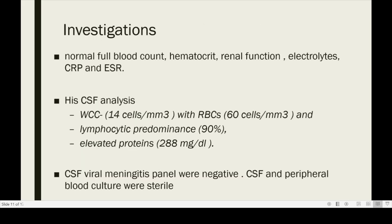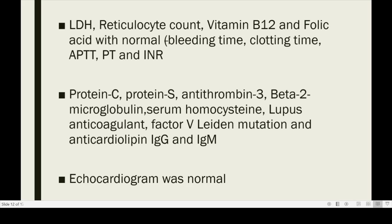We next investigated the cause of the internal cerebral vein thrombosis. He had a normal full blood count, hematocrit, renal function, electrolytes, and inflammatory markers. CSF count was elevated with 14 white cells and 60 red cells, predominantly lymphocytes. He had elevated proteins, which can also be seen in venous sinus thrombosis. CSF viral meningitis panel was negative, and CSF and peripheral blood cultures were sterile. Hematological evaluation showed normal LDH, reticulocyte count, B12, and folate. Clotting and coagulation profile were unremarkable, the prothrombotic screen was unremarkable, and echocardiogram was normal.